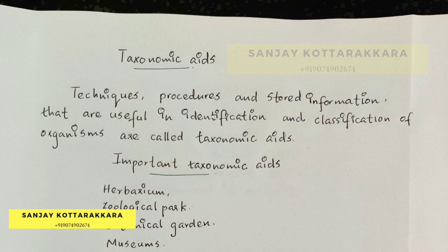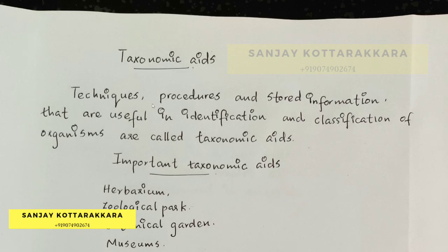We can classify an organism. Let's look at a zoological park. We can see different species of animals. We can categorize different species of animals. This is an example. The techniques, procedures, and stored information that are useful in identification and classification of organisms. So we can see taxonomical aids.